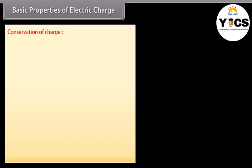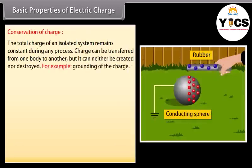Conservation of charge: The total charge of an isolated system remains constant during any process. Charge can be transferred from one body to another, but it can neither be created nor destroyed. For example, grounding of the charge.